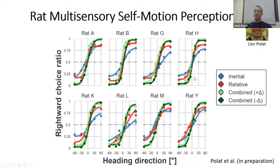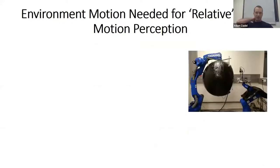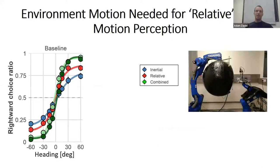In blue you see individual rats' psychometric responses to inertial motion stimuli, in red their responses to relative motion stimuli (the sphere moving while the rat is stationary), and in green the multi-sensory responses. To our surprise, relative motion stimuli were more reliable than inertial motion stimuli. We thought rats would be very good vestibularly and poor with relative motion since relative motion is largely visual and rodents are not known for exceptional visual acuity.